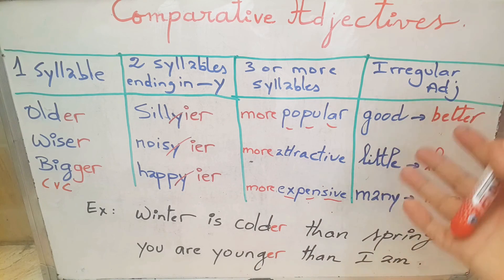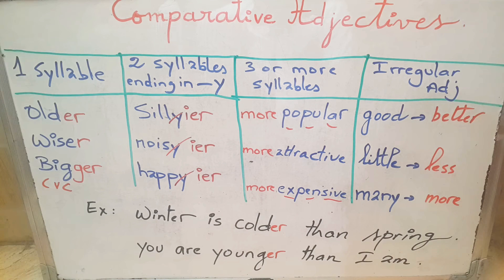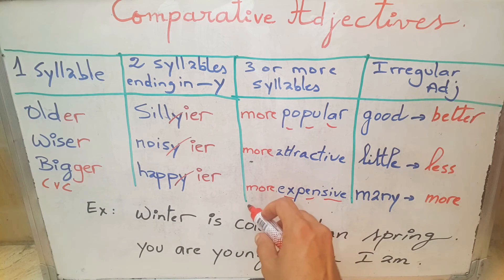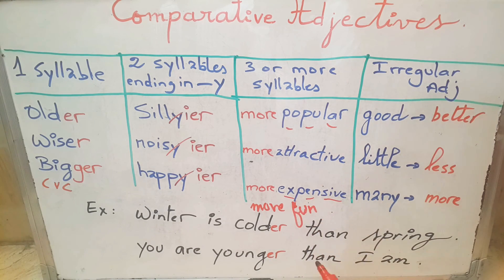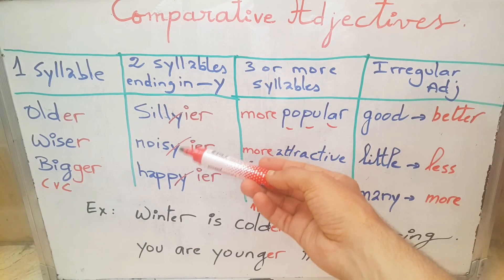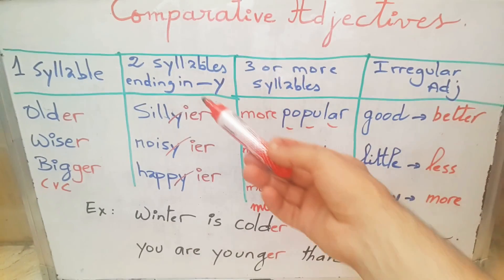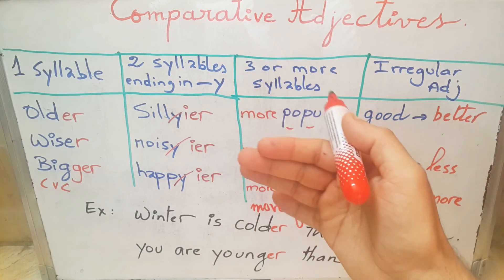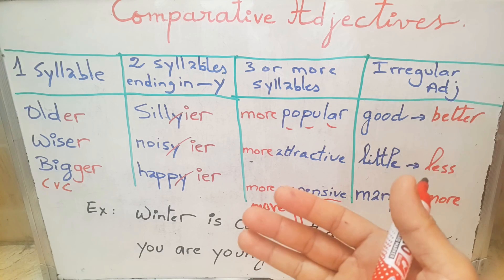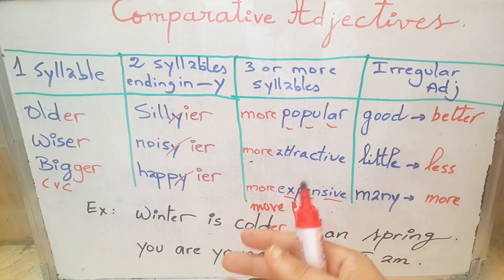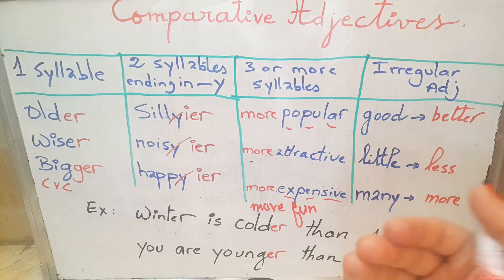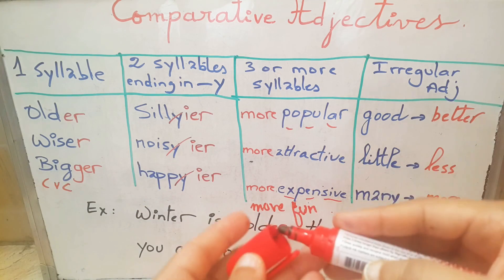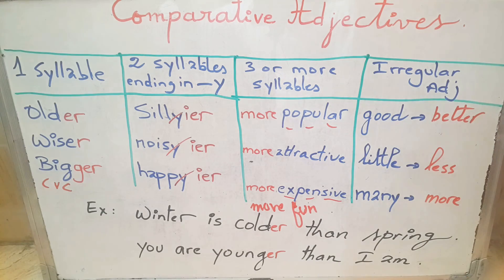Of course there are many exceptions to these rules. For example, the adjective fun is one syllable, but we do not say funner — we say more fun. Also in this category, we have many adjectives with two syllables where you could add either ER or more. For example, clever: you could say cleverer or more clever. I know sometimes it's confusing, but that's just what grammar is. I hope this grammatical construction has been useful. Thank you for watching and see you all soon.